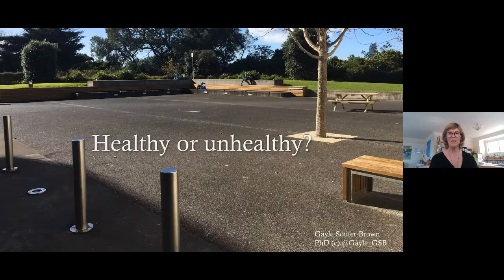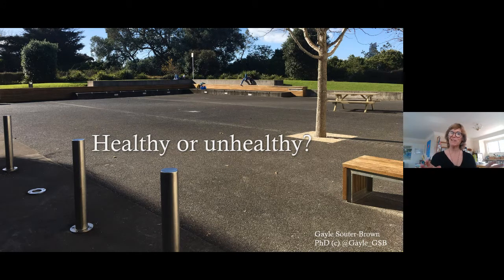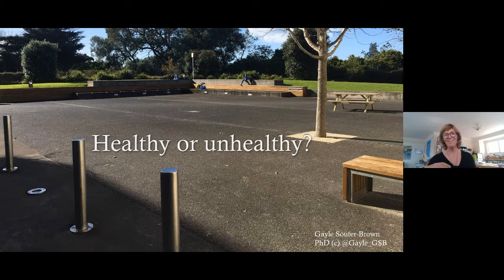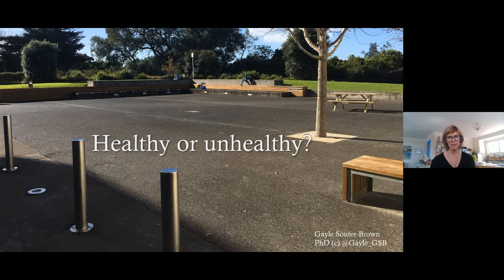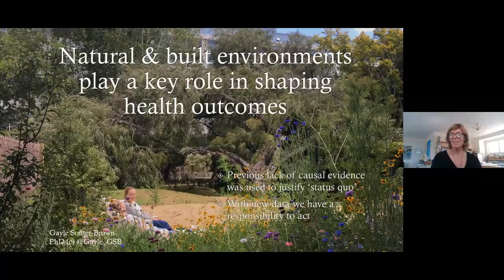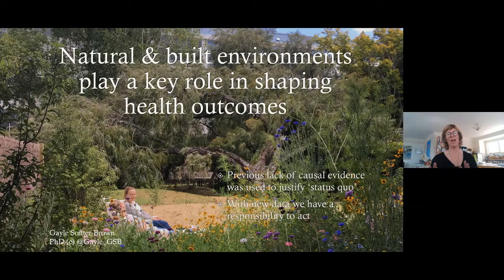Healthy or unhealthy? The plaza represents so many examples of public space around Ōtautahi — concrete-based seats, flat, almost brutalist architecture. There are reasons for that, but if we layer likely health outcomes on top of perceptions of what's fashionable and functional, we may want to change our approach. Natural and built environments play a key role in shaping health outcomes. Previously the lack of causal evidence was used to justify the status quo — no proof, no change. But we now have the data, and with that the responsibility to act.